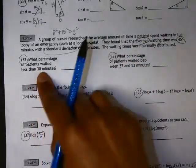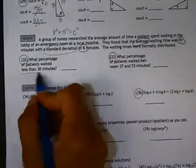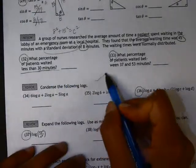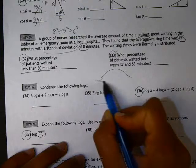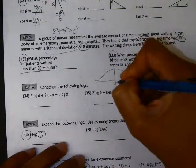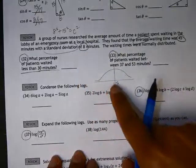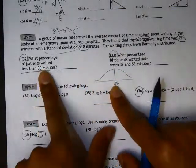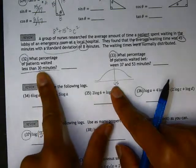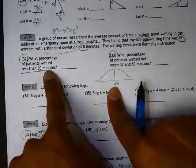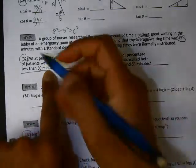On number 32, we're being asked what percentage of patients waited less than 30 minutes. So on the normal model, if we have an average of 45 minutes with a standard deviation of 8 minutes, the 30-minute mark doesn't fall at exactly one, two, or three standard deviations, but we can calculate the percentage by using the z-score for 30 minutes.